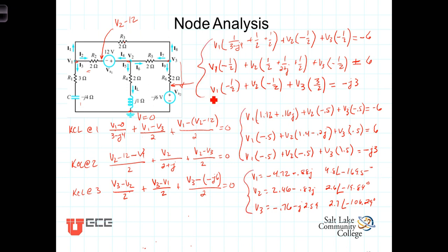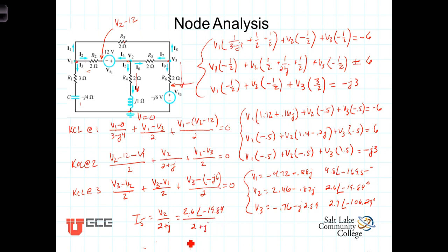Now that we have the voltages at each of the nodes, we can calculate any current or voltage we want. For example, let's determine the current leaving node 2 coming down this branch, identified as I5 or I-sub-L. I5 is equal to V2 divided by 2 plus j, which equals 2.6 angle negative 19.84 divided by 2 plus j. We find that is equal to 1.16 angle negative 46.4 degrees in polar coordinates.